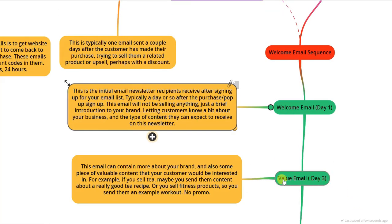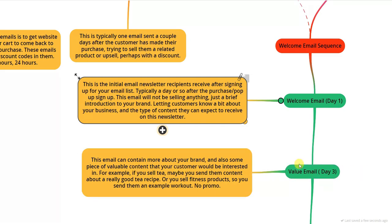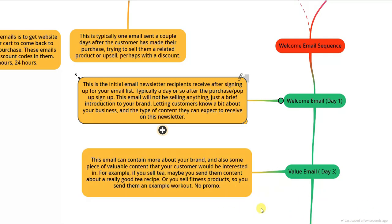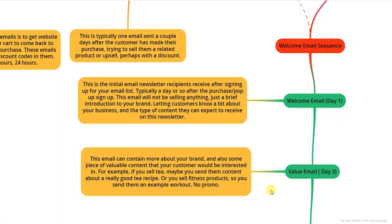The next email in the automated welcome sequence is a value email, sent around day three — two days after the welcome email. You can add more value emails if you want; this is just a simplified example template. The value email contains more about your brand and a piece of valuable content your customer would be interested in. For example, if you sell tea, you could send a tea recipe via a blog post or video. If you sell fitness products, you could send a sample workout plan.